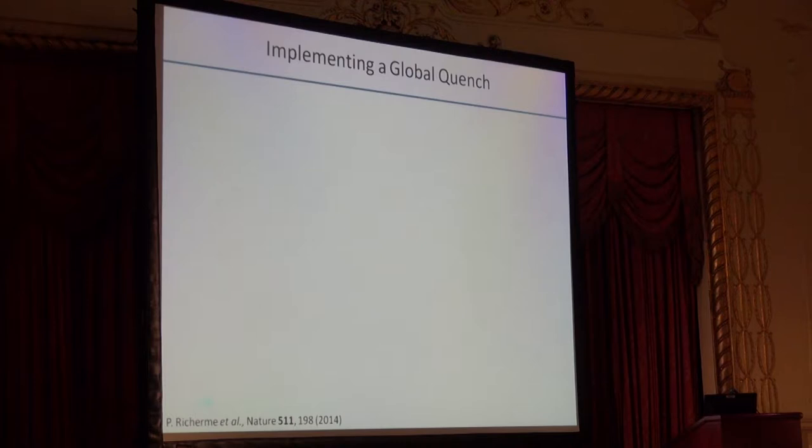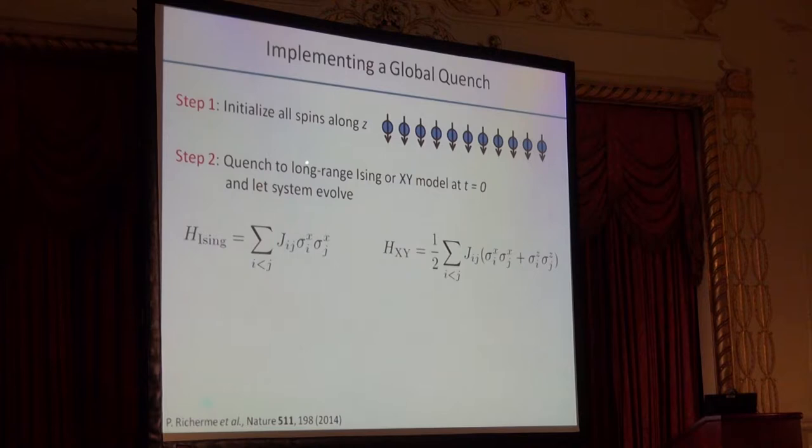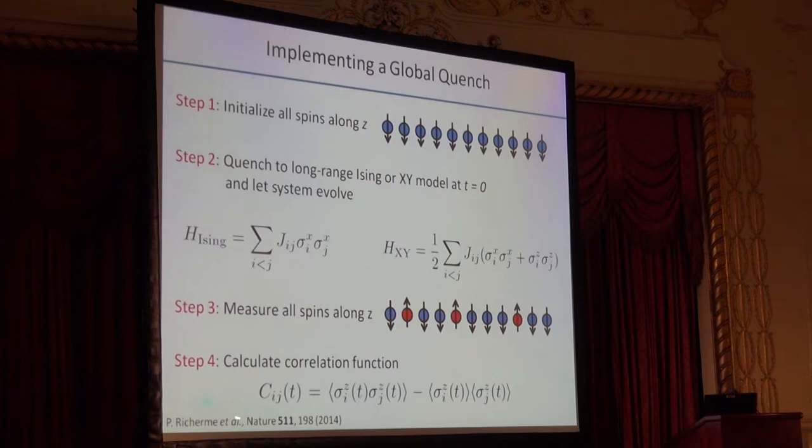Now what we did in our experiment, rather than accessing a site locally, we implemented a global quench, which means we made excitations on every single site of the lattice. To do this, we started by initializing all of our spins along the down direction Z on the Bloch sphere. Next, we suddenly turned on a long-range Ising Hamiltonian or a long-range XY Hamiltonian at t equals zero, and then we let the system evolve for a particular amount of time. After some time, we made a projective measurement along the Z direction and found out what the spin order was. After repeating those experiments many thousands of times to build up statistics, we were able to calculate what the correlation function was, the connected correlation function for the system at particular times.